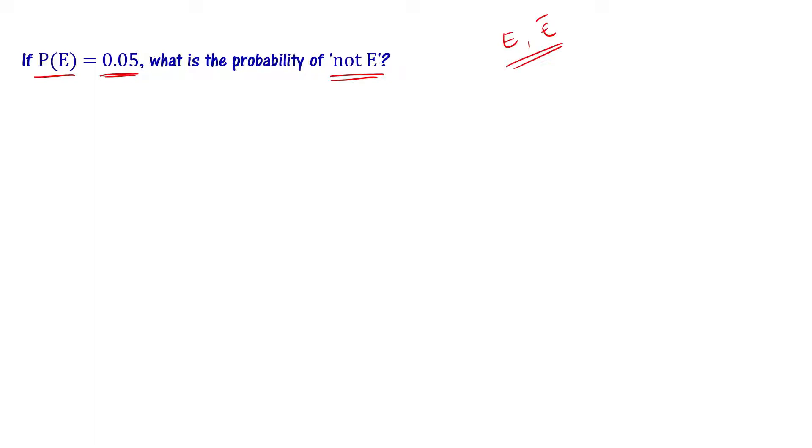For complementary events, we can say that the probability of occurrence of event E plus the probability of non-occurrence of event E is equal to 1. The occurrence of event E and the occurrence of its complementary event not E equals 1.